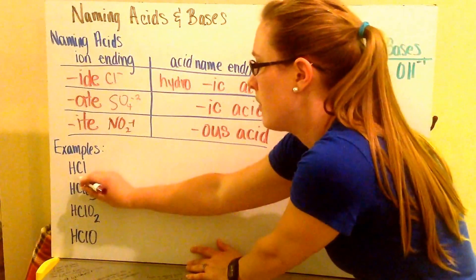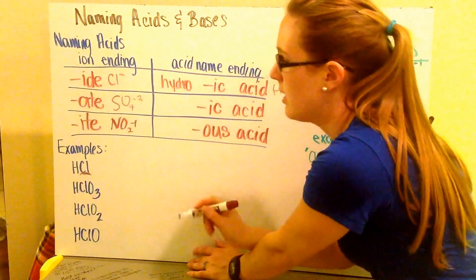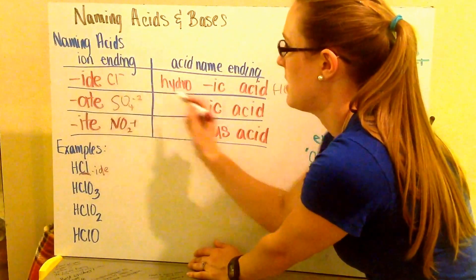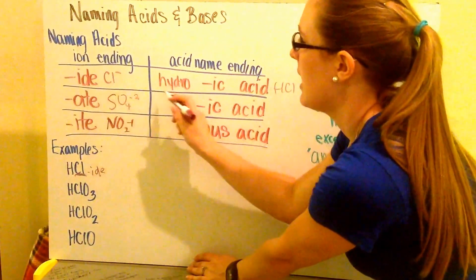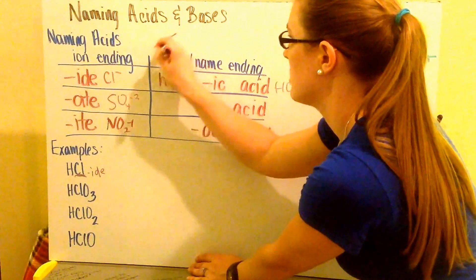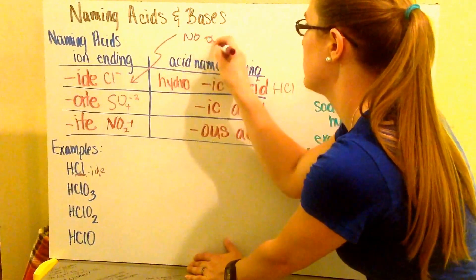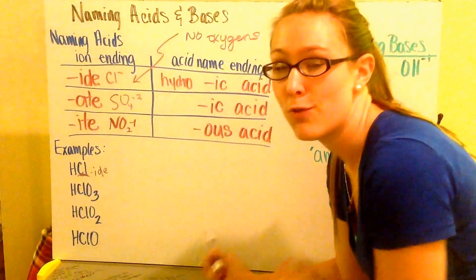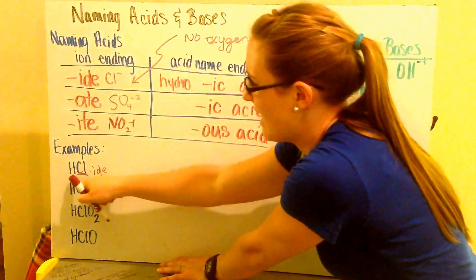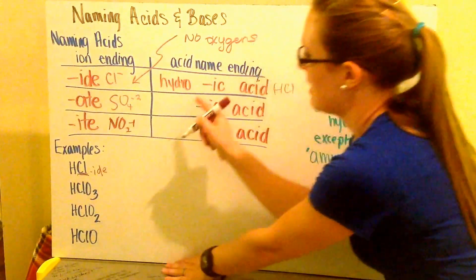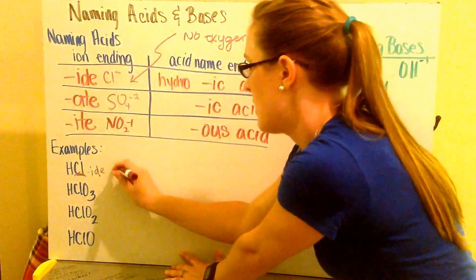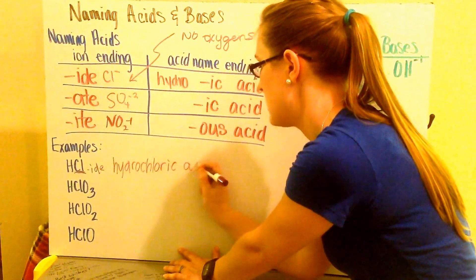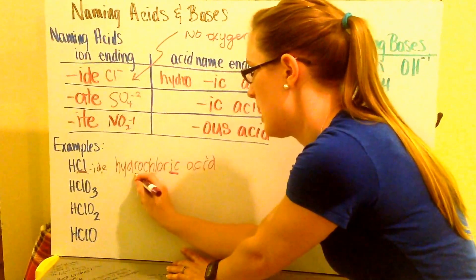If I have HCl, I look at my ion, which is my Cl, my chloride. Now chloride is my ending. So I go to my chart, chloride is going to be a hydro with an IC ending. And notice that my chloride ending does not have any oxygens. So here we have no oxygens, whereas my other ones, they have oxygens. My ITEs and my ATEs will have oxygens because they are formed with polyatomic ions. So back here I have HCl, which is chloride. So that's going to get into my hydro prefix with my IC ending. So I have hydro, chlor, IC, acid with my IC ending and my hydro prefix.